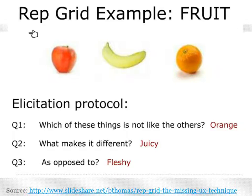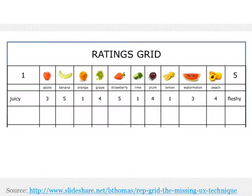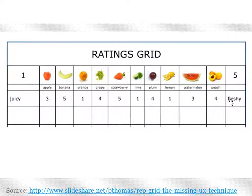Here is a basic example using some fruits. You have a few fruits and you elicit some knowledge about these using a protocol. You have a set of questions and you elicit some characteristics. These go into a grid where you have more characteristics as a contrast. One is strong agreement to the left pole of the characteristics and five is agreement with the right pole, and these are various fruits which the person evaluated.